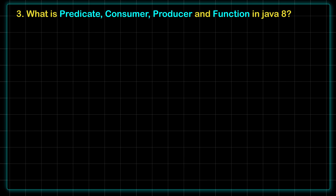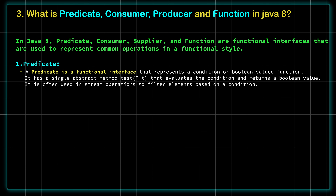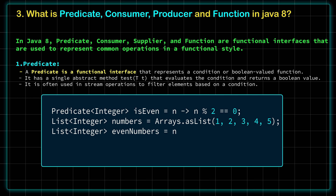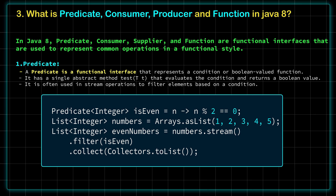Moving to the next question: what is Predicate, Consumer, Producer, and Function in Java 8? This is one of the important and very frequently asked questions in Java interviews — please take special care of it. Predicate, Consumer, Producer, and Function in Java 8 are all functional interfaces used to represent common operations in a functional style. Predicate is a functional interface which represents a condition or a boolean-valued function. It has a single abstract method called test() that evaluates the condition and returns a boolean. Predicate is most often used in stream operations to filter out elements based on a condition.